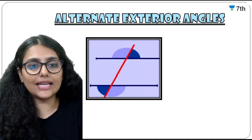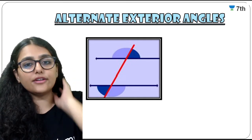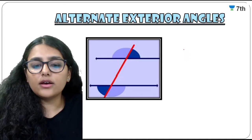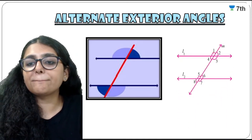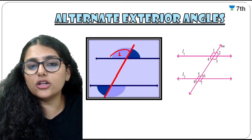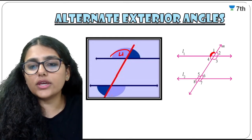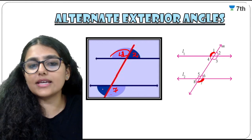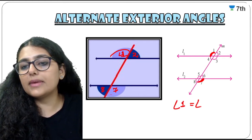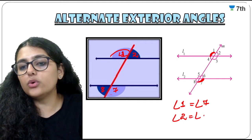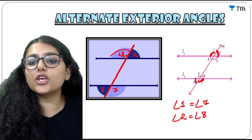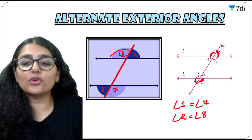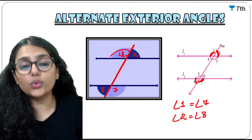Next: alternate exterior angles. The difference is that these two angles lie outside both the lines. Angle 1 equals angle 7, and angle 2 equals angle 8 — these are alternate exterior angles. Please note these down because you will need these rules when solving questions.